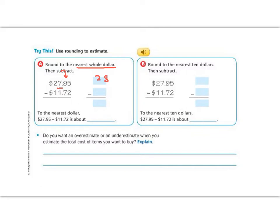In our next number, we have 11.72. So underline the digit and look next door. I see we have a 7. 7 is greater than 5, so that also is going to round up. 11 is going to change into 12. And now it says we are going to subtract. 8 minus 2 is 6, and 2 minus 1 is 1. So we are left over with 16. So the nearest dollar amount of 27.95 minus 11.72 is about $16.